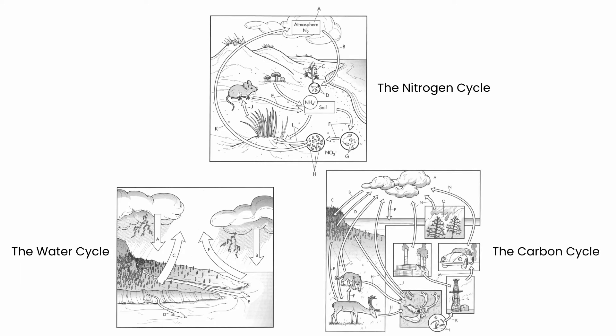The third cycle we're going to look at is the carbon cycle. Carbon can be cycled in many ways through our biosphere, and these are all important because they can have major impacts on climate change. It's also important to point out that all three cycles have major reservoirs, so keep your eye out for what those reservoirs are.